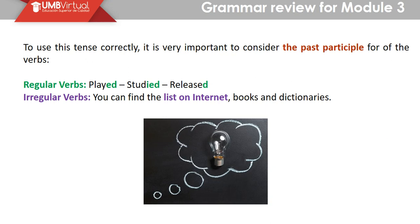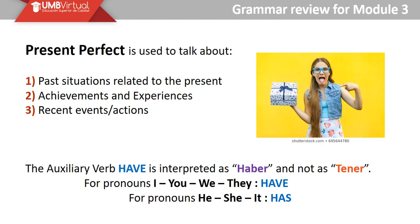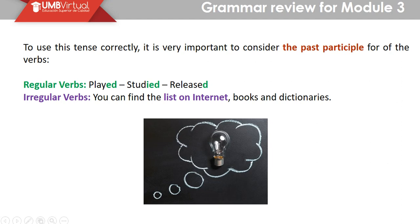To use this tense correctly, it is very important to consider the past participle form of the verbs. The structure is: subject + have/has + verb in past participle. Es muy importante tener en cuenta que los verbos se categorizan como verbos regulares e irregulares. A partir del conocimiento, la práctica y el uso que tengamos de ellos, va a ser mucho más fácil recordarlos y clasificarlos.